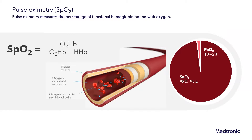Pulse oximetry measures the percentage of functional hemoglobin bound with oxygen. Ninety-eight to ninety-nine percent of oxygen is bound to hemoglobin as measured by the SaO2, whereas only one to two percent of oxygen is circulating in the plasma as measured by the partial pressure of arterial oxygen. The SpO2 is calculated by dividing oxygenated hemoglobin by the sum of oxygenated and deoxygenated hemoglobin.